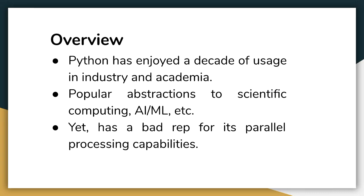Python is a great language. It has helped the industry and academia a lot — more than a decade, actually. It has provided good abstractions for scientific computing, AI, and machine learning, giving us very good frameworks like TensorFlow, PyTorch, and Keras. But when it comes to parallel processing capabilities, it does not have the best reputation. Today, common tutorials for multi-threading and multi-processing are great but they're heavy — they start with the intense stuff and stop before you get to the day-to-day useful parts. So today we'll see why Python has a bad rep for parallel processing and what we can do about it.